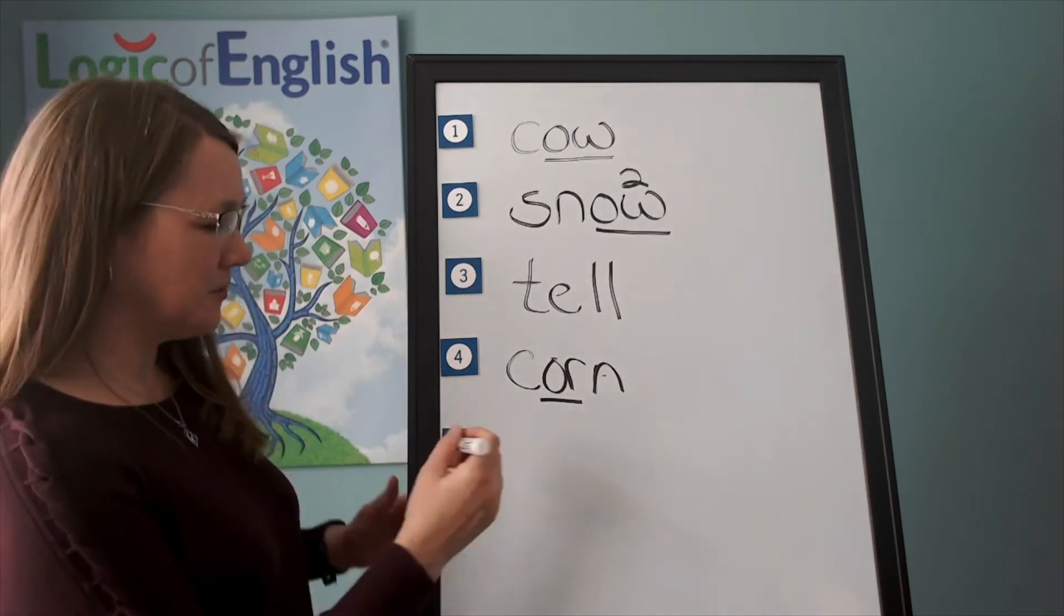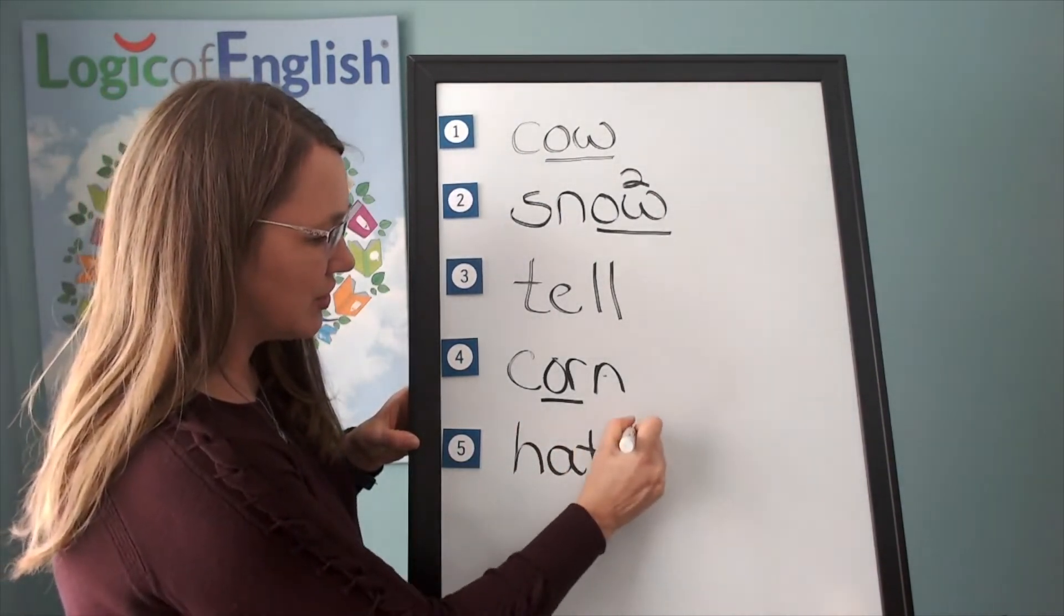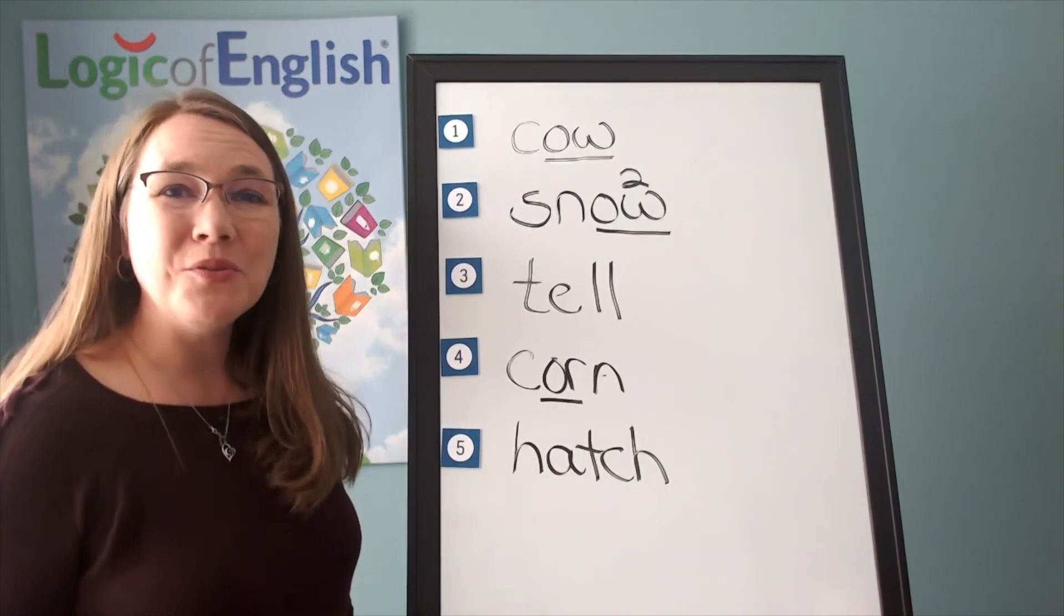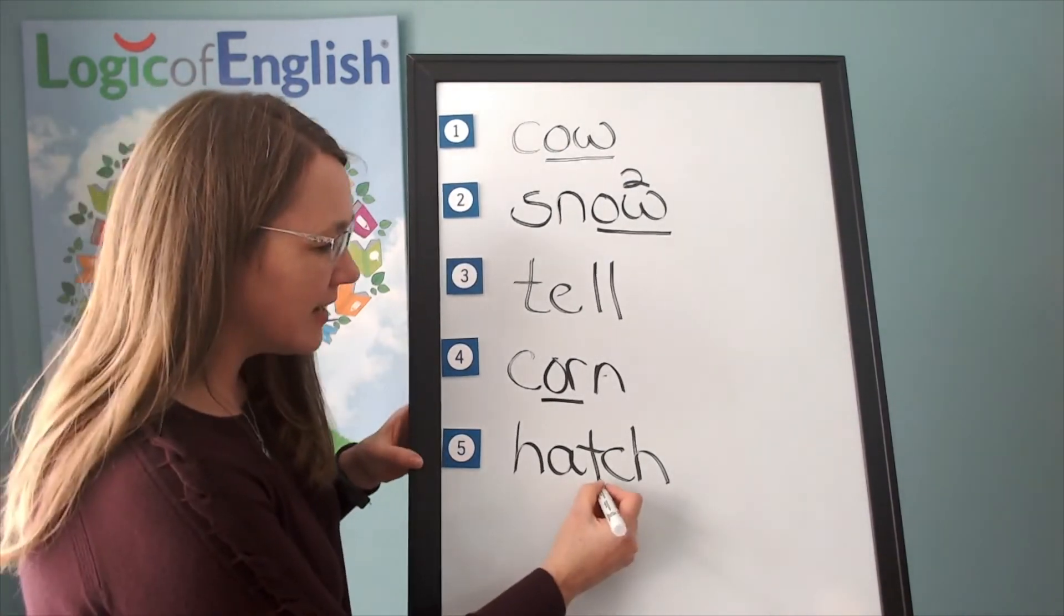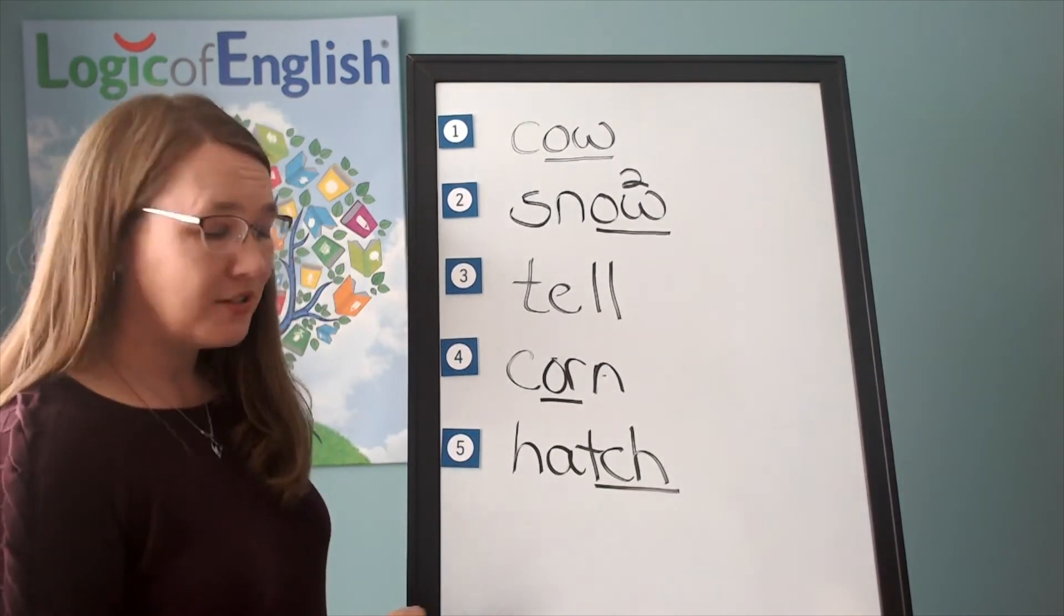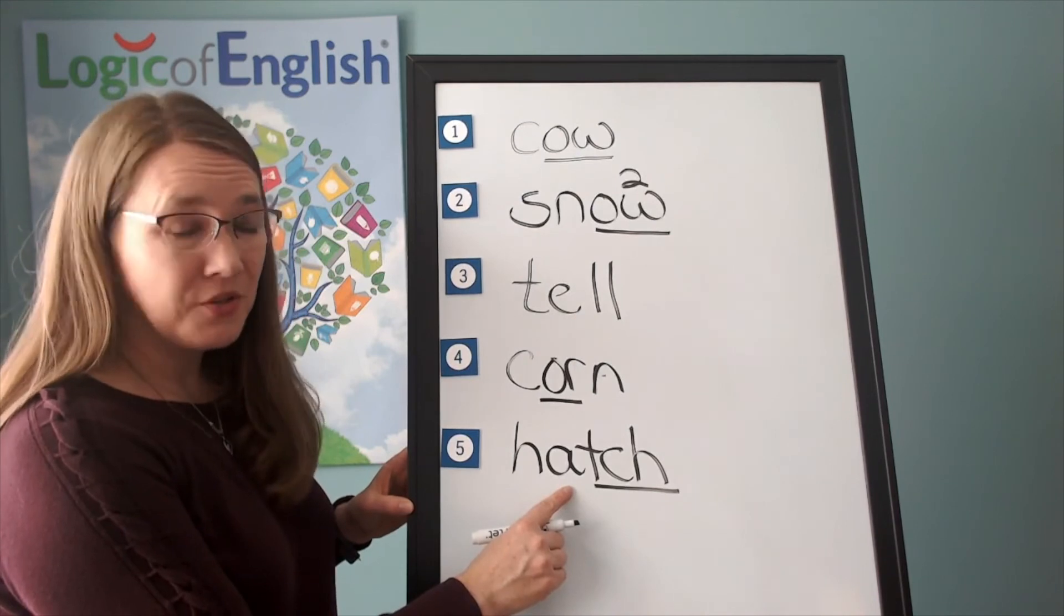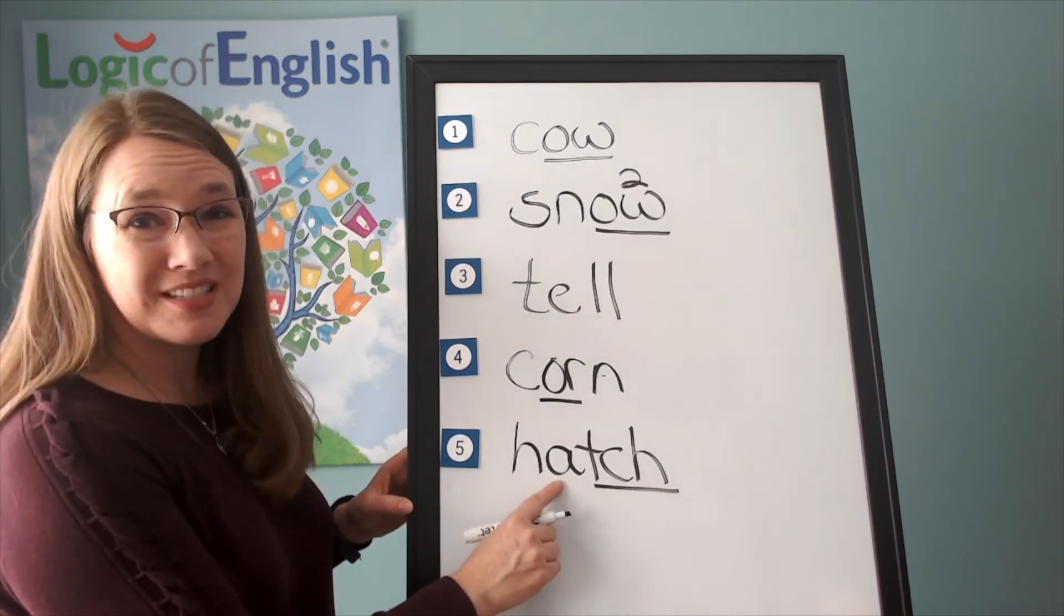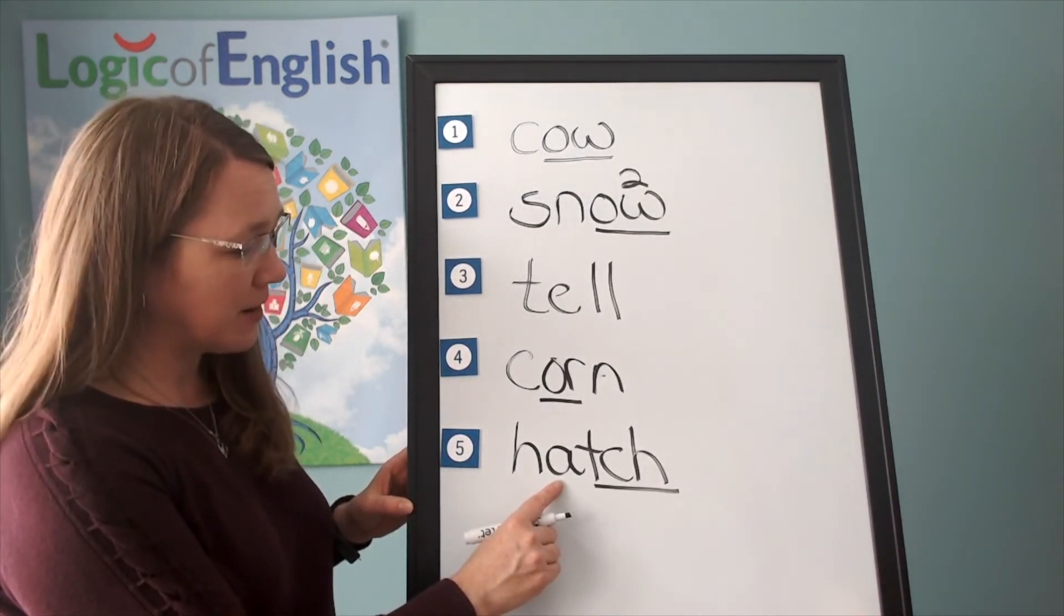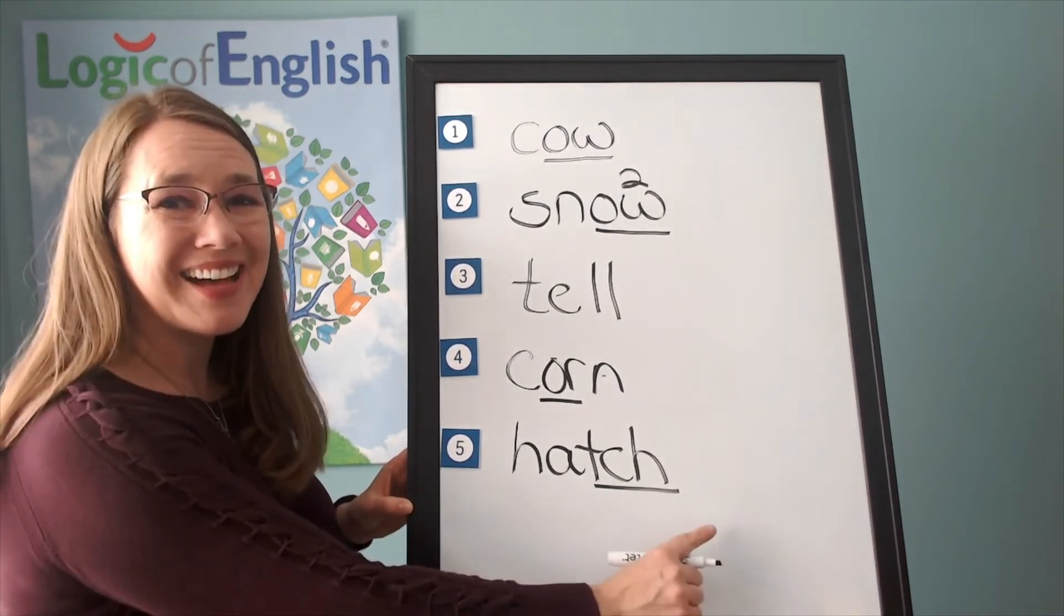Now help me to write it. H-a-ch. And how will we mark it? We'll underline the ch. And why could we use three-letter ch? That's right. It's after a single short vowel. So we use three-letter ch after a single short or broad vowel. Let's sound it out. H-a-ch. Hatch.